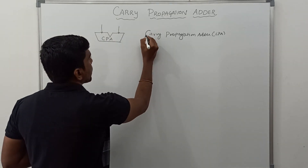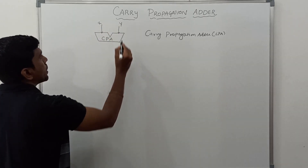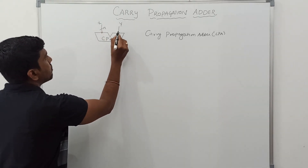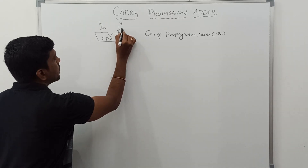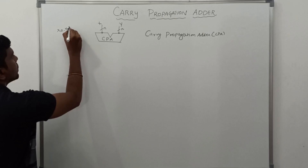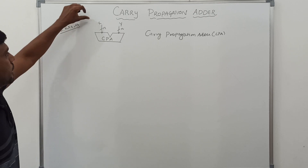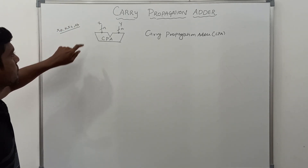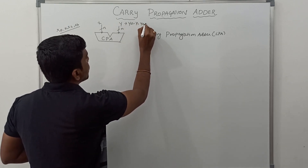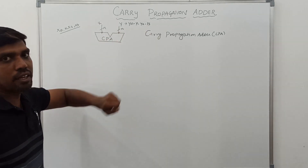In this carry propagation adder it has two inputs, namely called x and y. This x is an n-bit value and y is also an n-bit value. For example, for 4-bit addition, x is represented as x0, x1, x2, x3 and y is represented as y0, y1, y2, y3. Here n represents the number of binary digits.